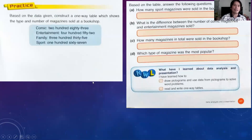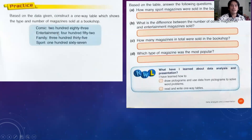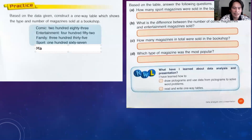Let's start answering practice exercises found on page 211. You are going to make a one-way table now. Get your pencils. Do not forget to write the title. The title of this is: 'Number of Magazines Sold at a Bookshop.' You can write the title as 'Magazines Sold at a Bookshop.' It's a title, so it should be in capitals.